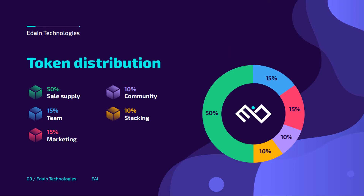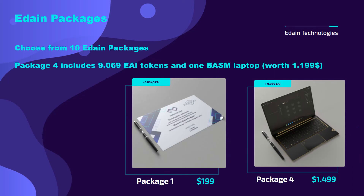The token distribution is: 50% to the sales supply, 15% to the team, 15% to marketing, 10% to community, and 10% to staking. Staking will launch right after the public listing with an APY of approximately 10%. There will also be a smart vesting schedule — no way for token holders to dump all their tokens after public listing. The earlier you purchase the token, the slower your tokens will be unlocked. The vesting schedule is published on the official website, edain.ai.